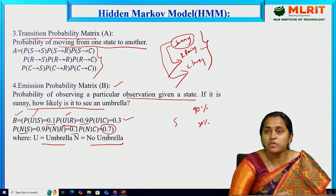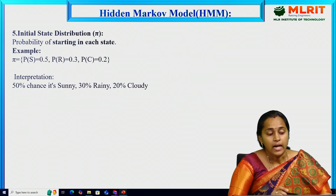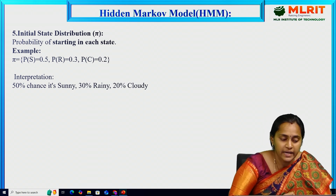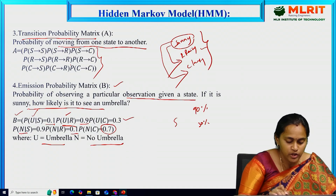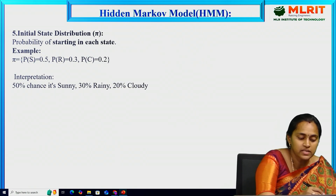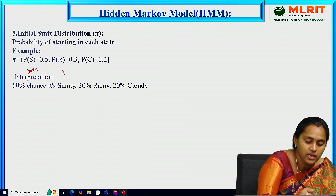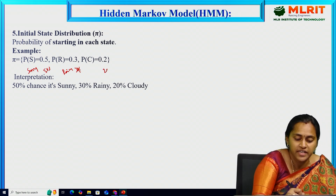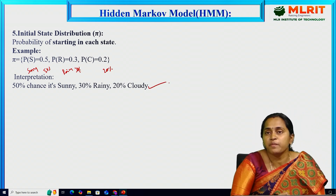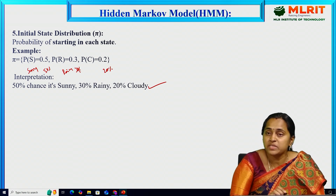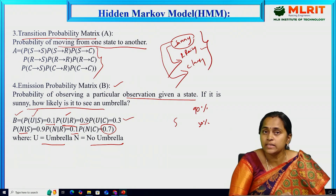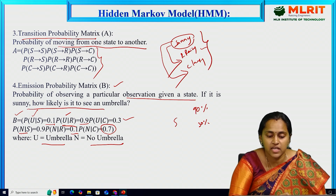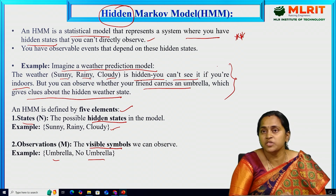Finally, the initial state distribution is called pi (π). The formula gives: probability of sunny = 50 percent, probability of rainy = 30 percent, and probability of cloudy = 20 percent. So we give a 50 percent chance to sunny, 30 percent to rainy, and 20 percent to cloudy. This is the overall concept of the Hidden Markov Model — how we find transition probabilities and emission probabilities using this basic weather example.